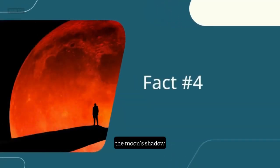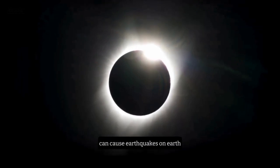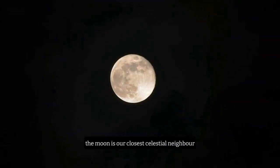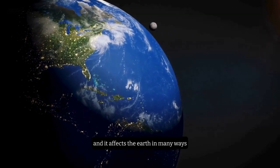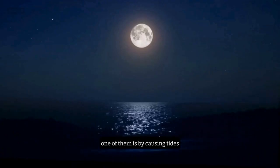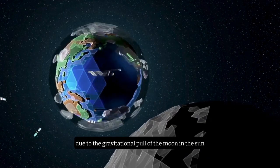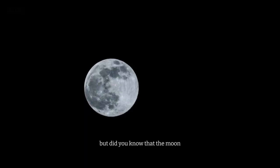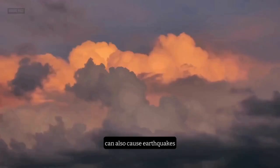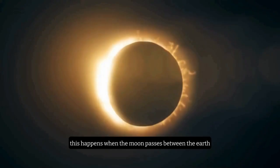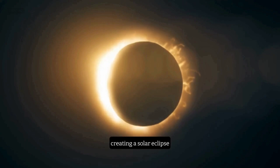Fact number 4. The moon's shadow can cause earthquakes on Earth. The moon is our closest celestial neighbor, and it affects the Earth in many ways. One of them is by causing tides, which are the rise and fall of the sea level due to the gravitational pull of the moon and the sun. But did you know that the moon can also cause earthquakes? This happens when the moon passes between the Earth and the sun, creating a solar eclipse.